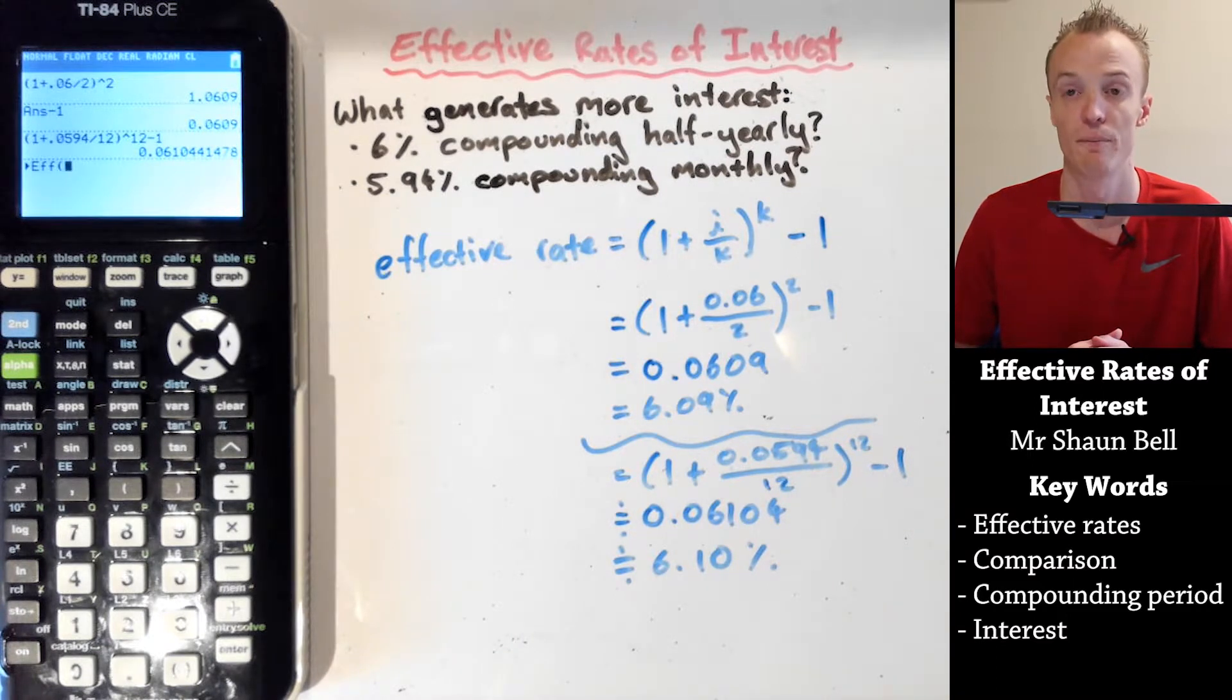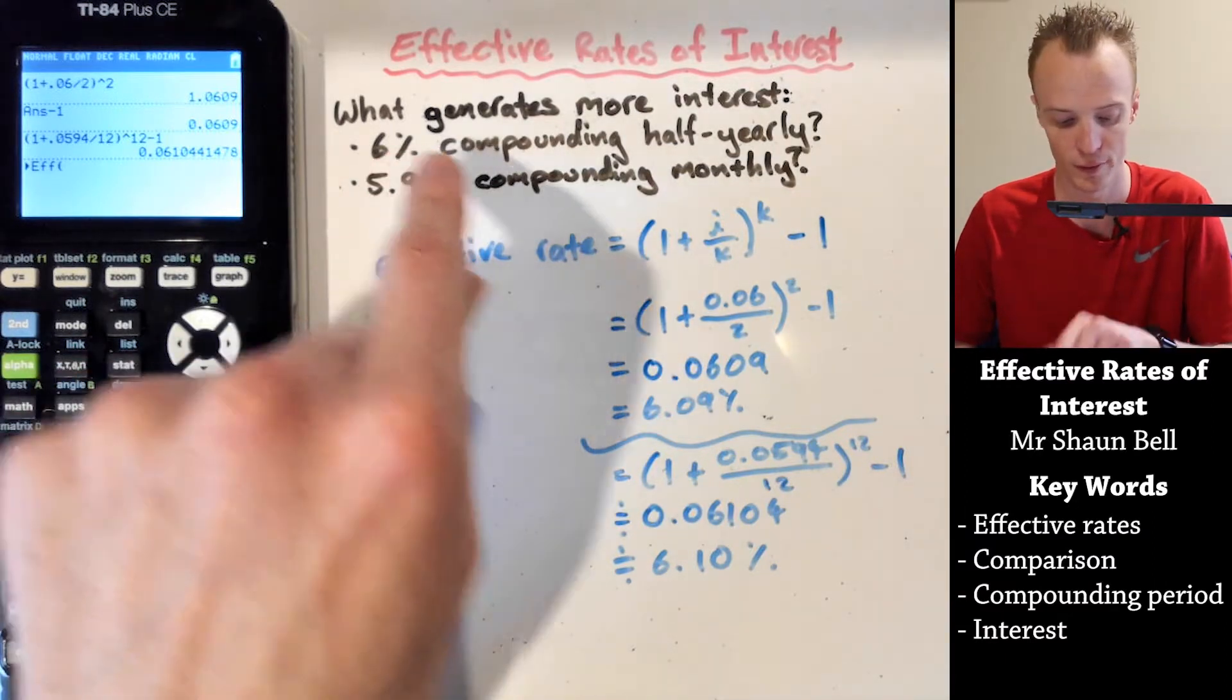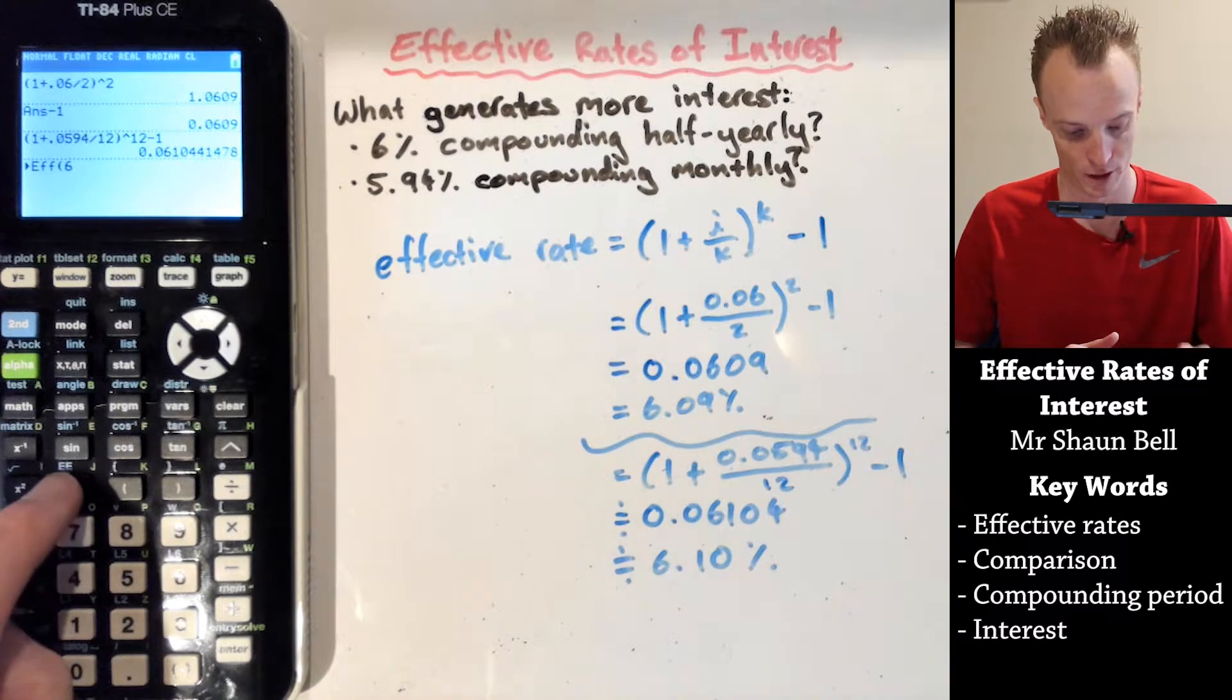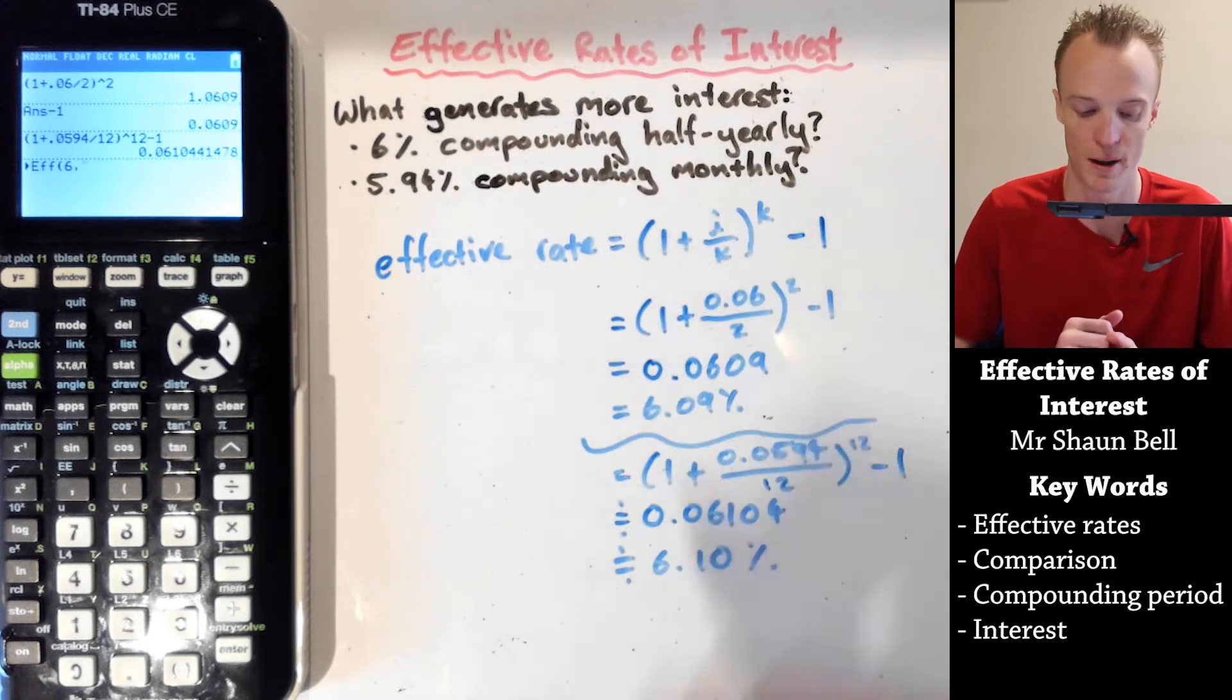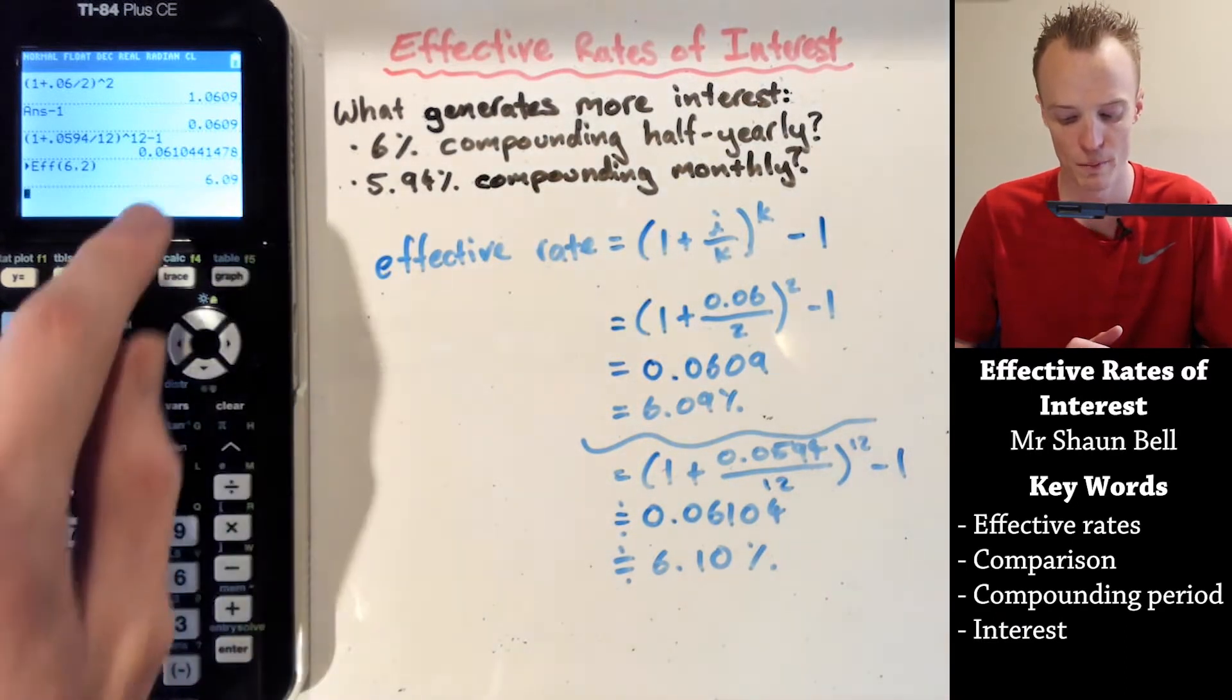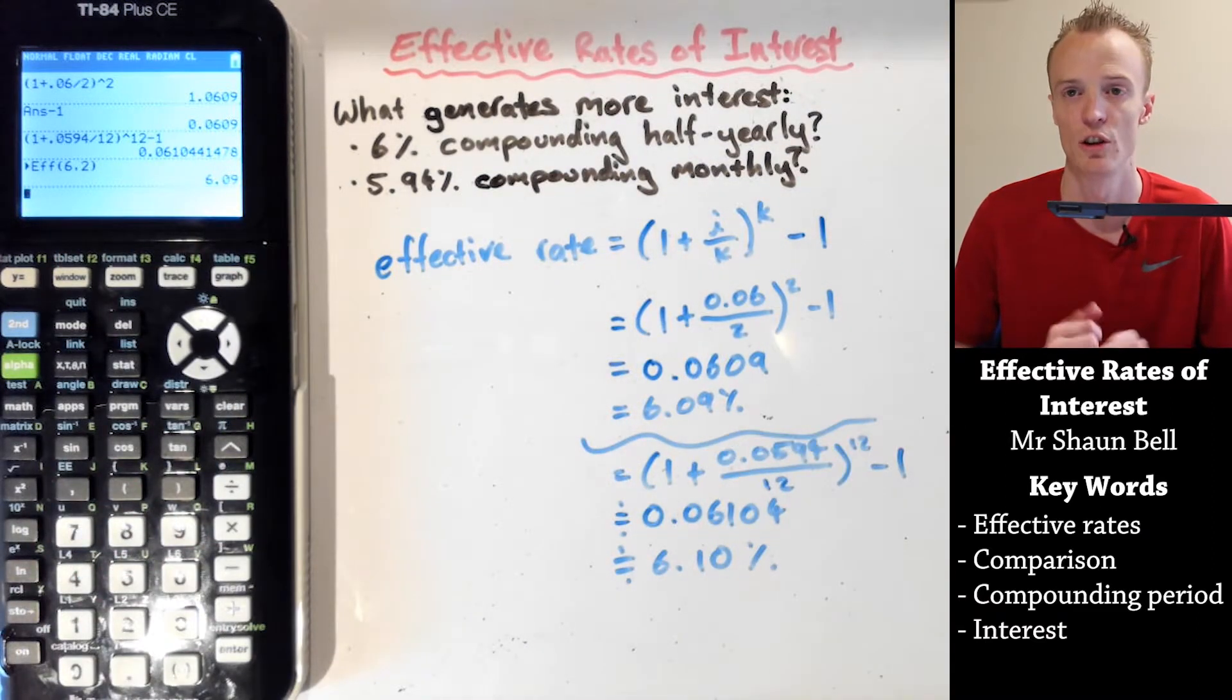If we hit enter here, it'll ask us for the information. You need to put in your percentage. So if we took the first one, 6%, we put in the 6%, and then we put a comma, which is just located here. Now it'll require the number of times it compounds per year. So the 6% was compounding half-yearly. So if we put the 2 in here and close a bracket and hit the enter, it'll automatically do this process for us and tell us as a percentage what the effective rate of interest was when it was 6% compounding half-yearly.